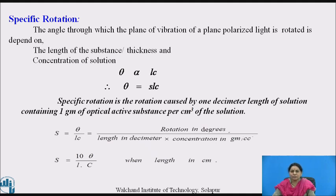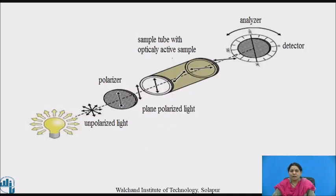There are two formulas from which we can calculate the specific rotation value. This diagram shows the optical activity phenomenon: the unpolarized source, when passed through a polarizer, is restricted to only one plane, giving plane polarized light. This plane polarized light is passed through a tube containing an optically active sample, and the change in rotation of the plane polarized light is detected under the detector.